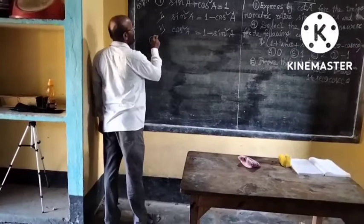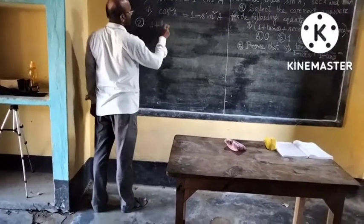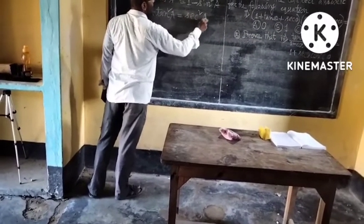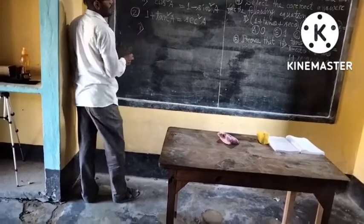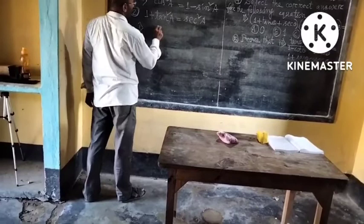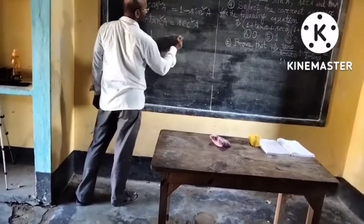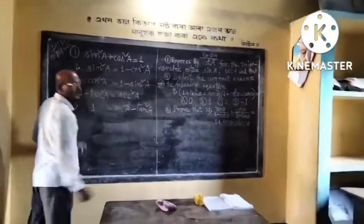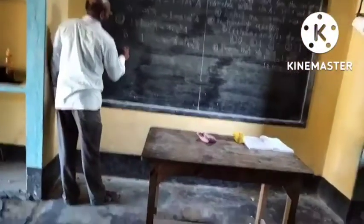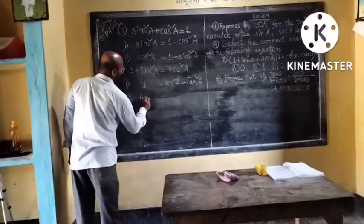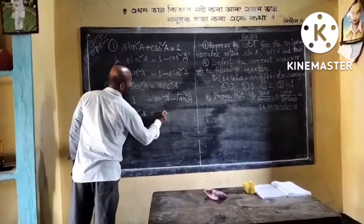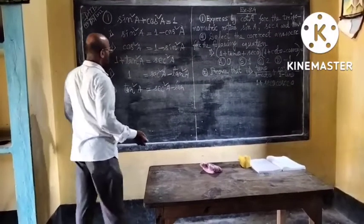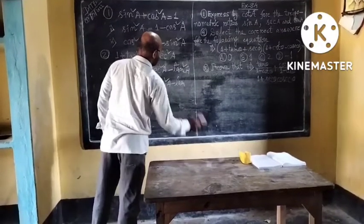From identity 2: 1 plus tan squared E is equal to sec squared E. We can also write number 1: 1 is equal to sec squared E minus tan squared E. Similarly, number 2: tan squared E is equal to sec squared E minus 1.